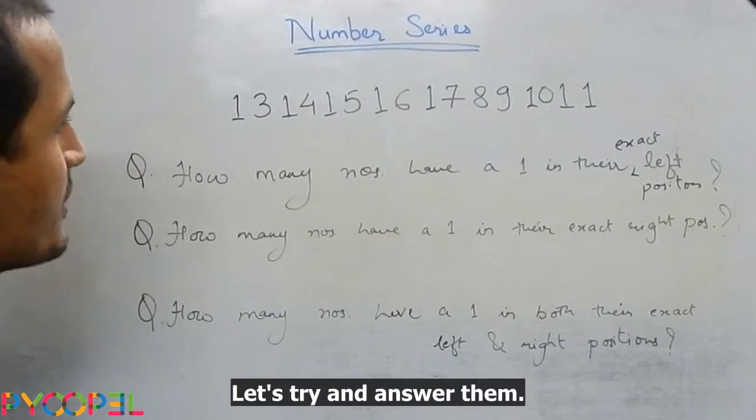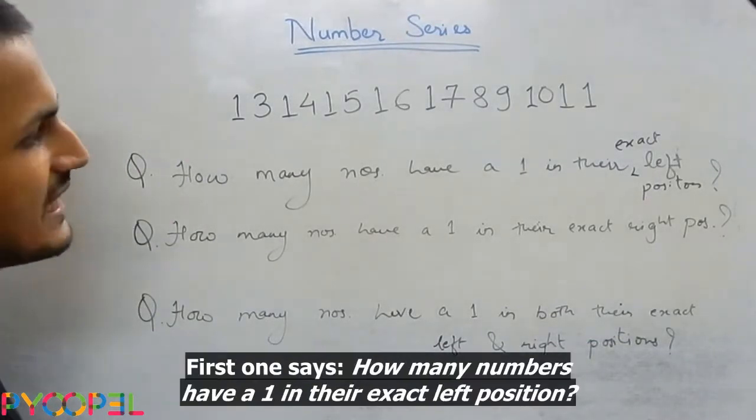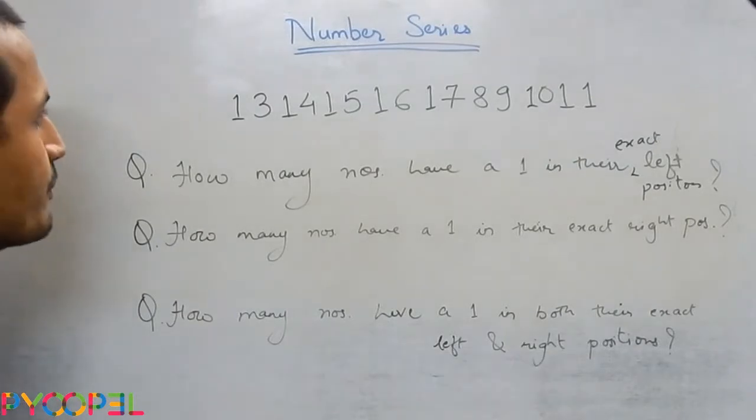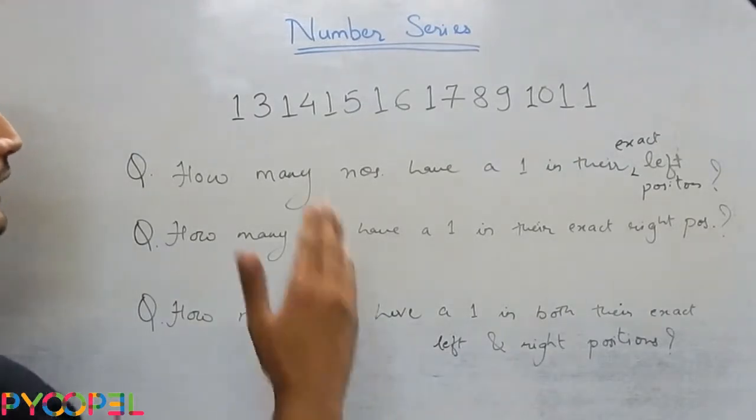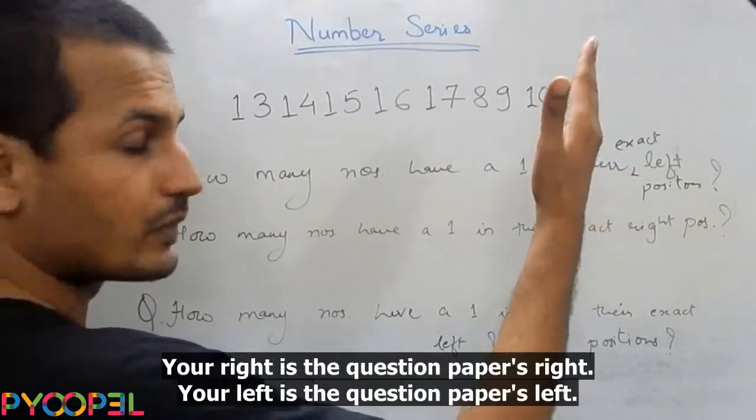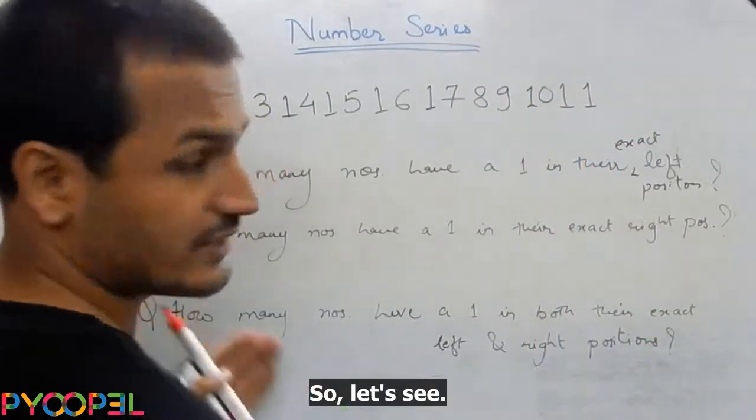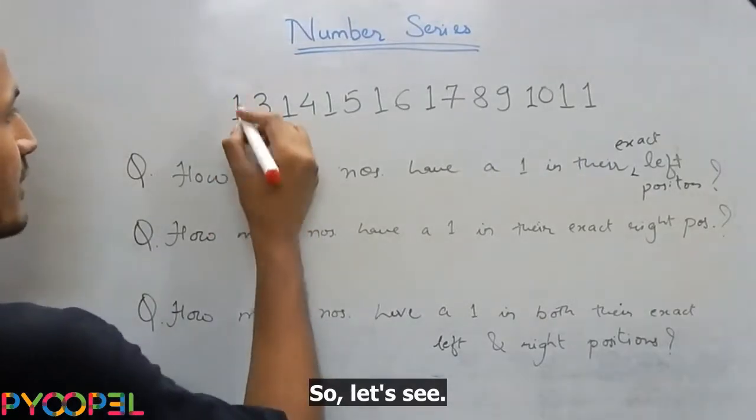Let's try and answer them. First one says, how many numbers have a 1 in their exact left position? Okay. Your right is the question paper's right. Your left is the question paper's left. So let's see.